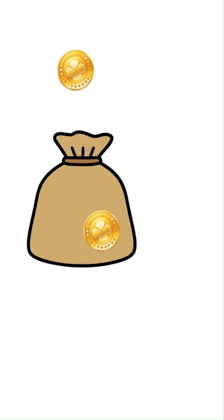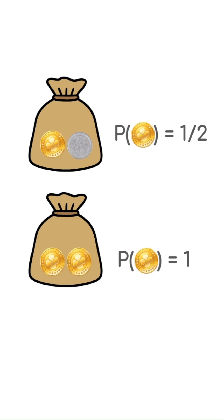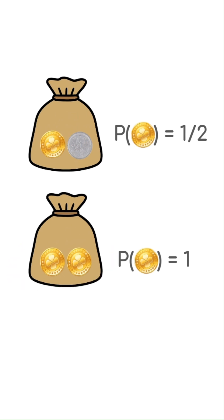Remember, the probability of picking a gold coin out of the bag with one gold and one silver coin is just one-half, whereas the probability of picking gold from the bag with two gold coins is one. So after observing the first coin to be gold, we can be a bit more certain that we picked the bag with two gold coins.